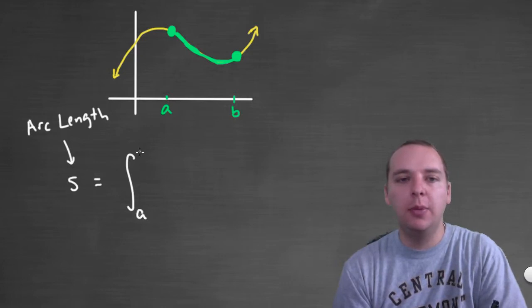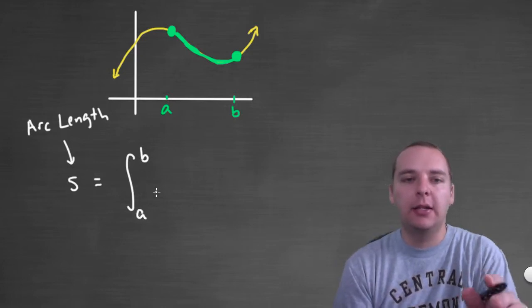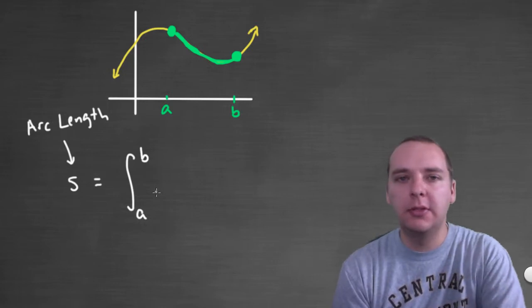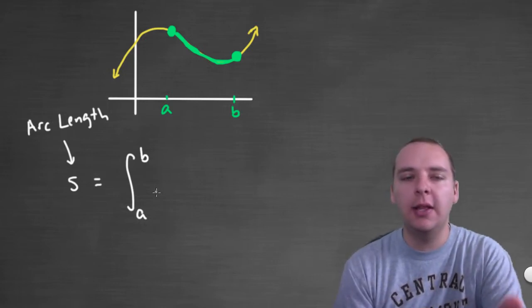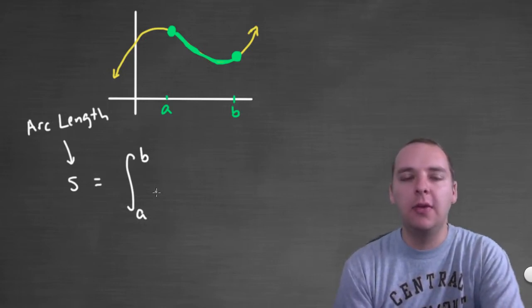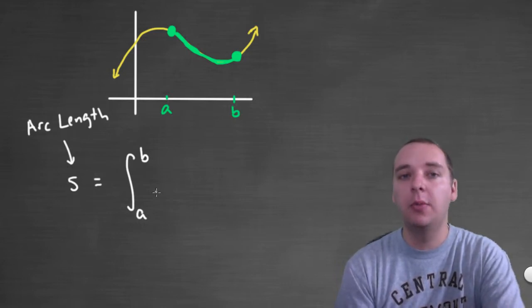Now if I write the integral from a to b, and I stop right there, you would probably stop me and say, well hang on Devin, I thought definite integrals gave you area under a curve, not length of a curve, and that would be correct.